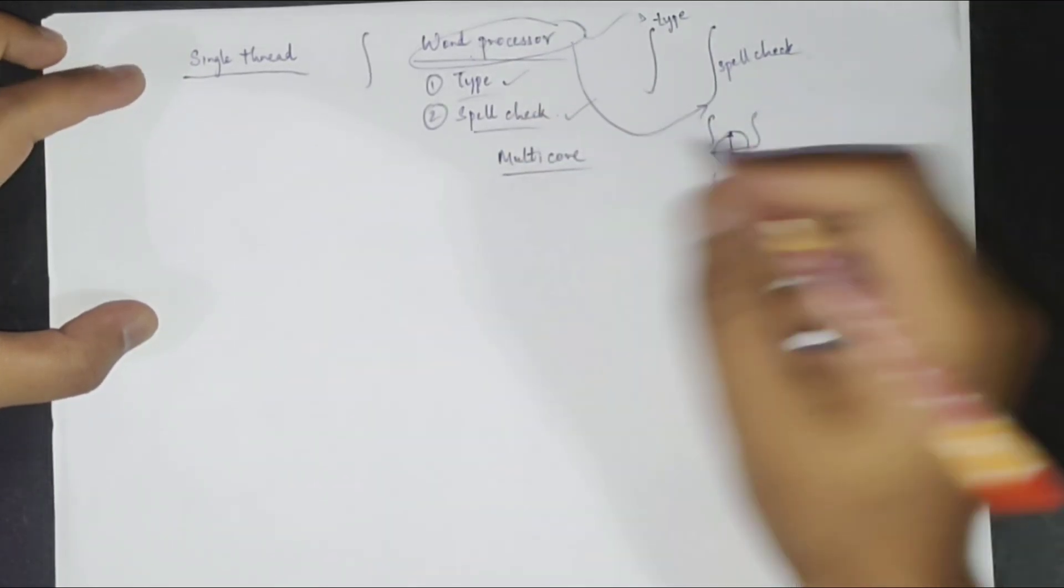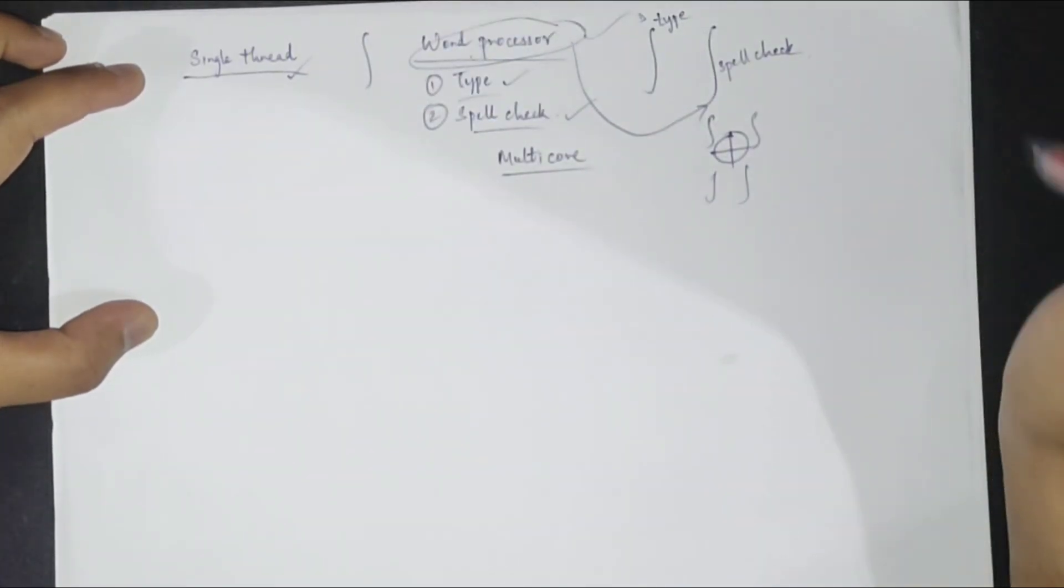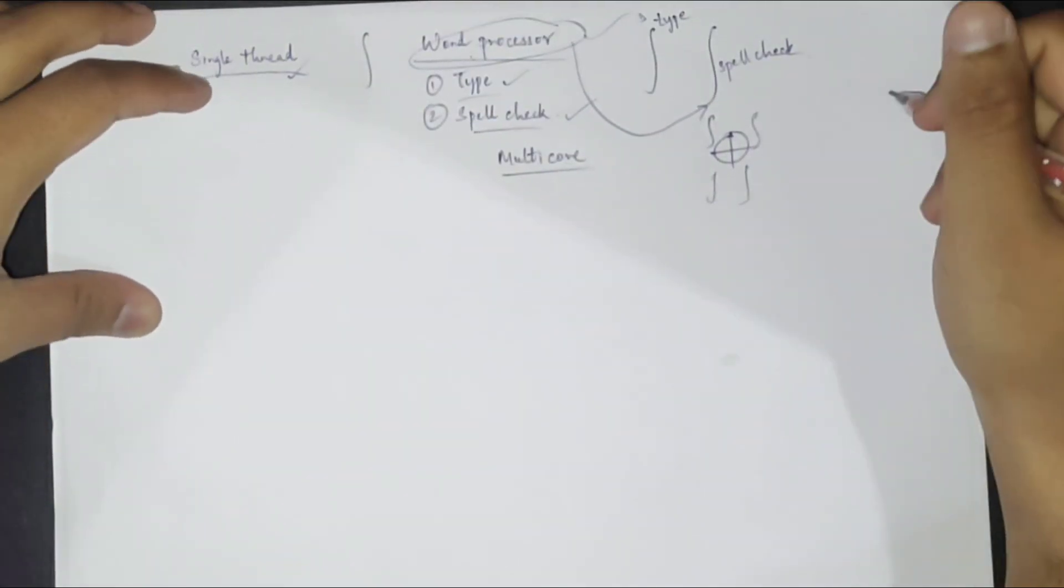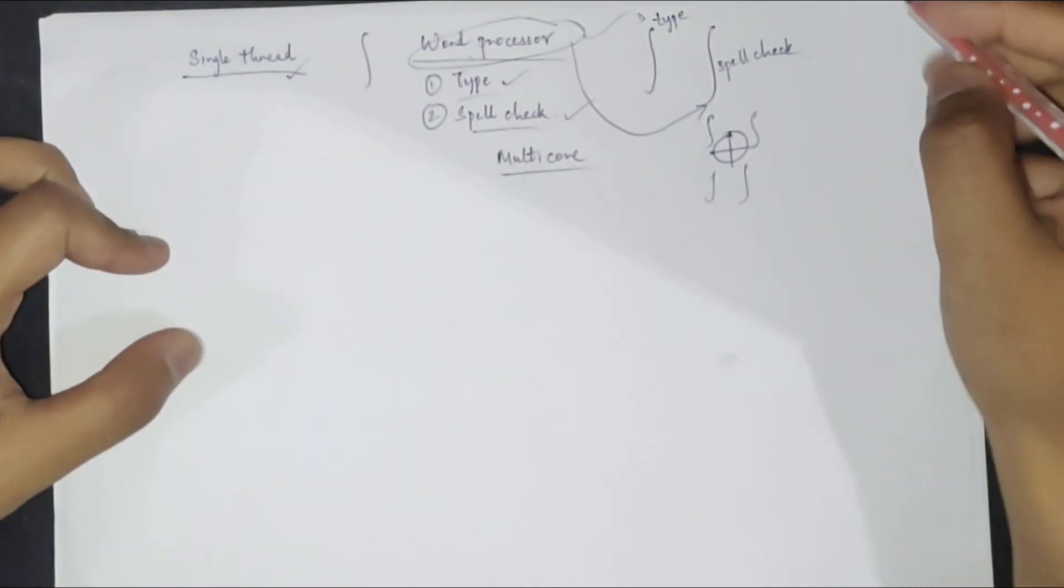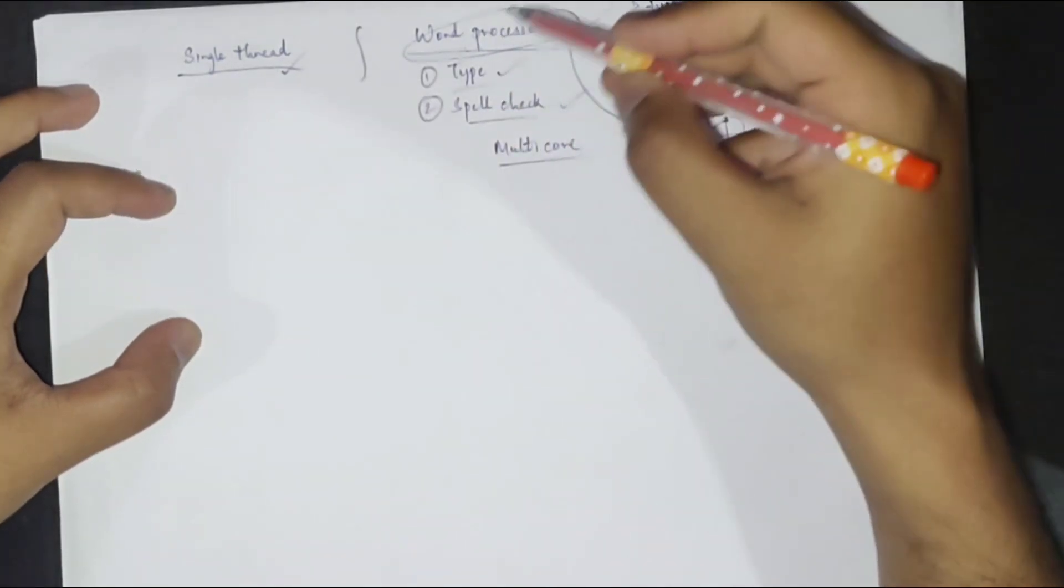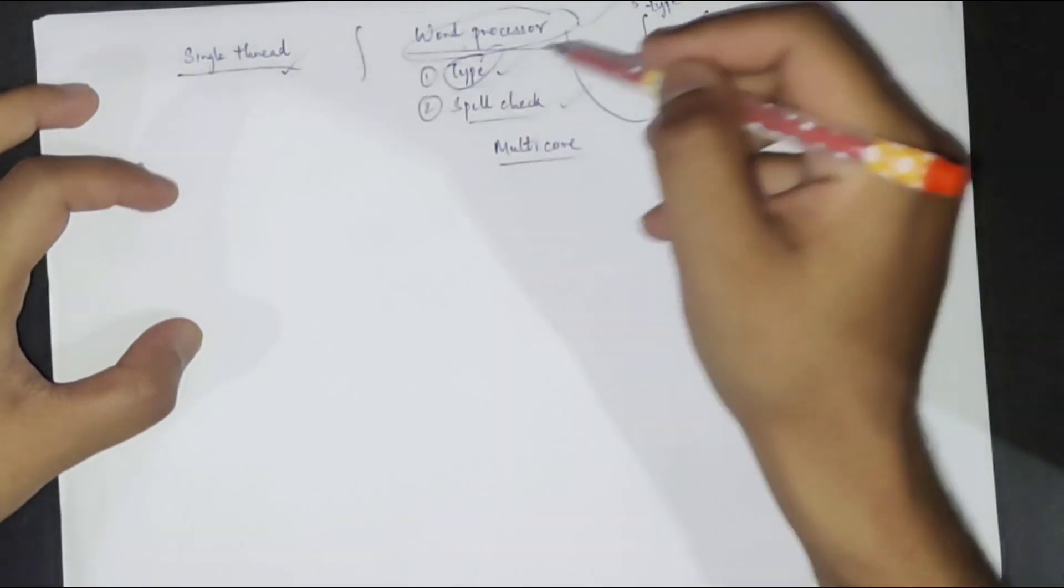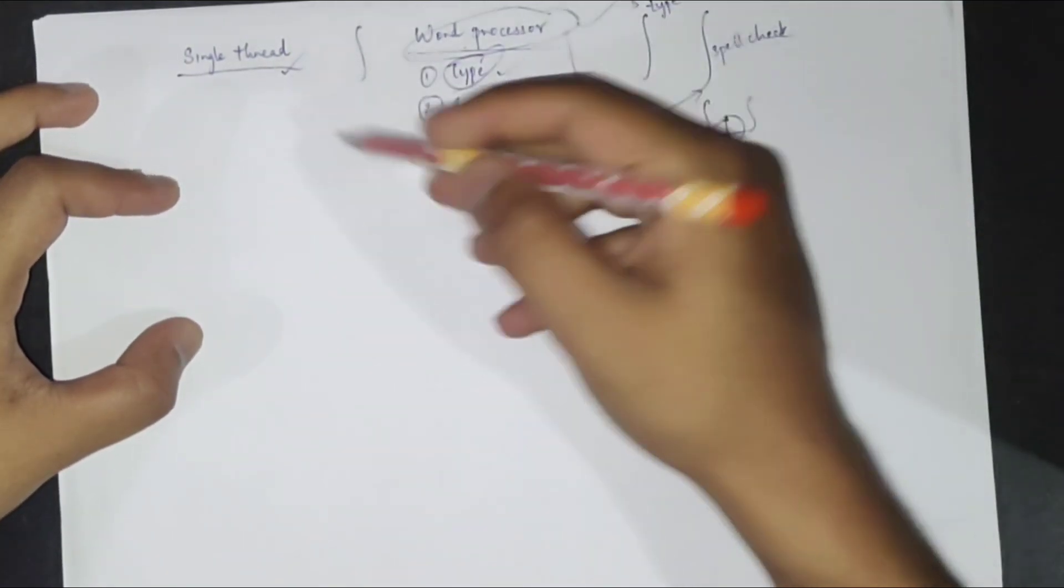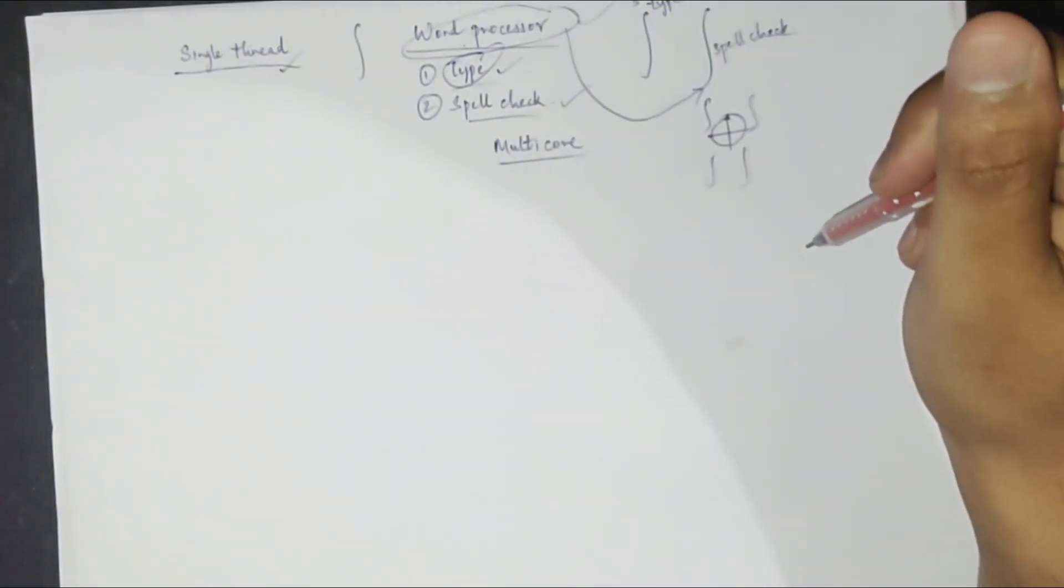So this is actually about threads. This was just a brief introduction. We would actually have a very thorough discussion on threads. There is a whole chapter on threads actually. So for now, just to recap, threads are basically, you can consider threads to be a part of a process. So instead of just performing one task, we can perform all the tasks simultaneously if you have multiple threads. So that is the whole idea of threads.